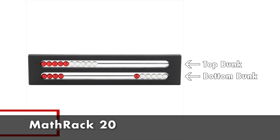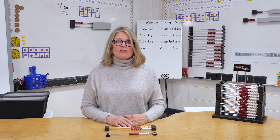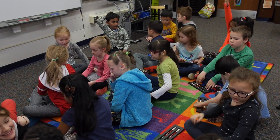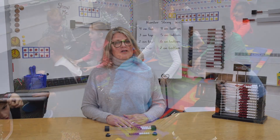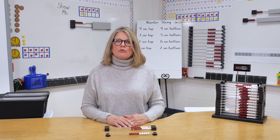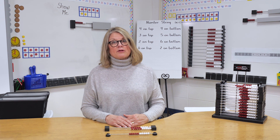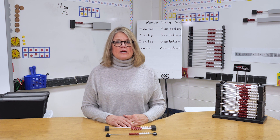The top bunk would be represented by the top row of beads and the lower bunk by the bottom row. The teacher would create a problem using the bunk beds, and the children would move the beads to model the situation. Once the beads are moved, discuss the solution and ask children to justify their answer. The teacher may also extend the conversation to 'How do you know?' For instance, seven plus eight may be seen as seven plus seven plus one, or eight plus eight minus one, or ten plus five.